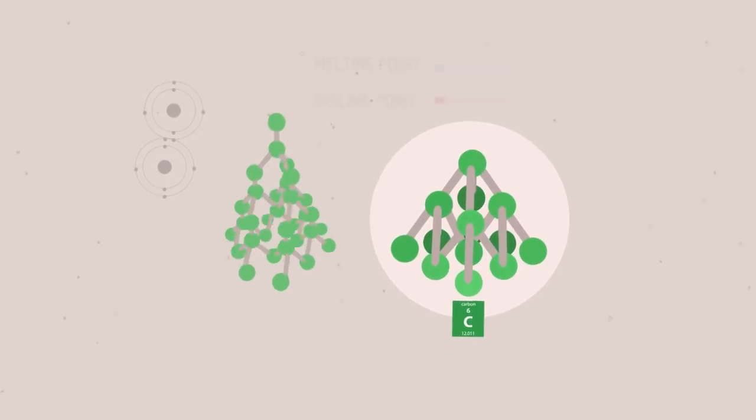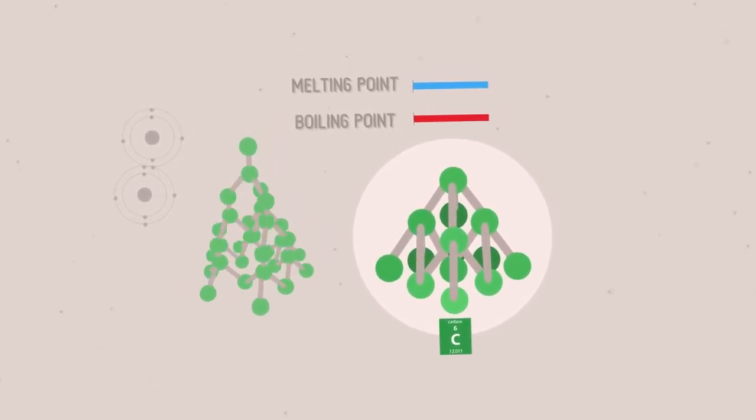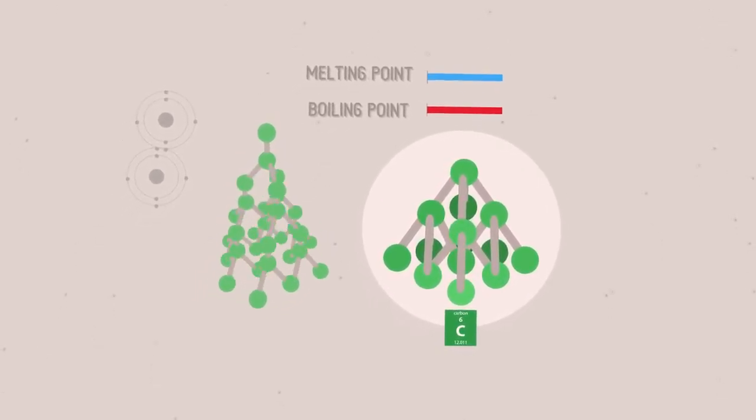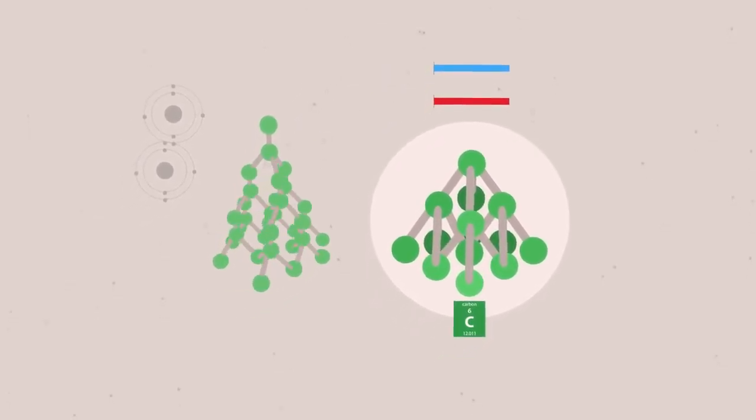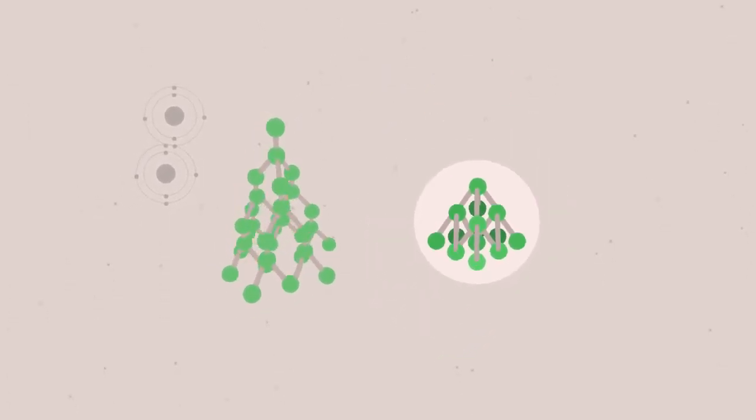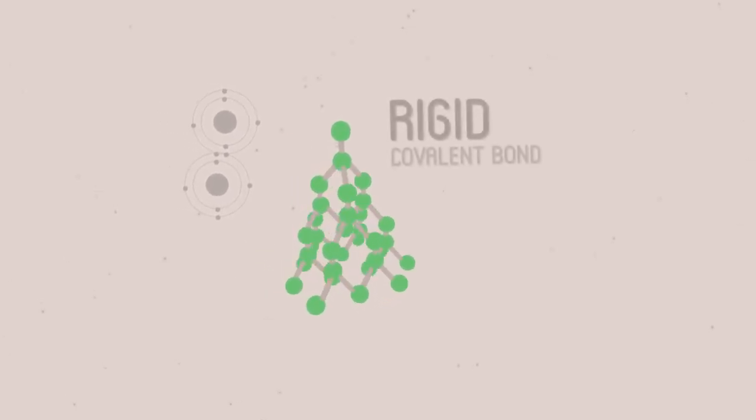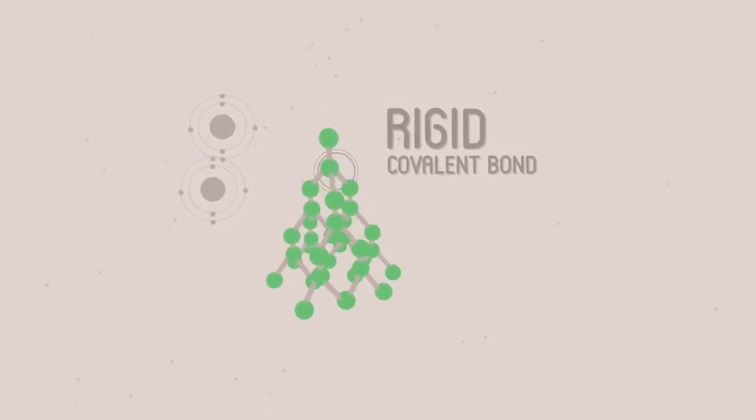These compounds have very high melting and boiling points, because you have to break covalent bonds, rather than intermolecular forces, to make them free enough to act as liquids or gases. The covalent bonds hold them rigidly in place in the giant lattice.